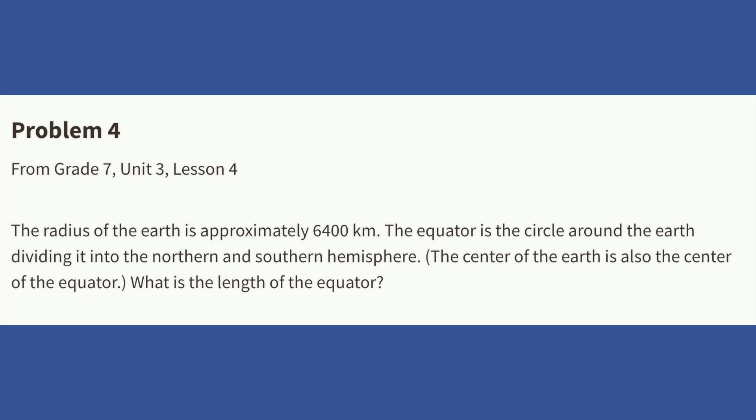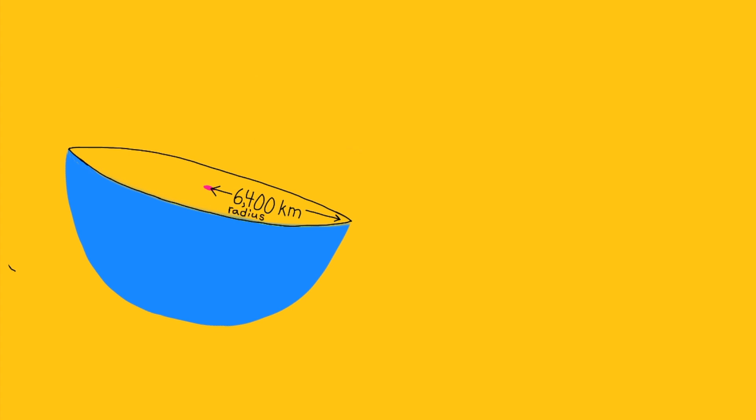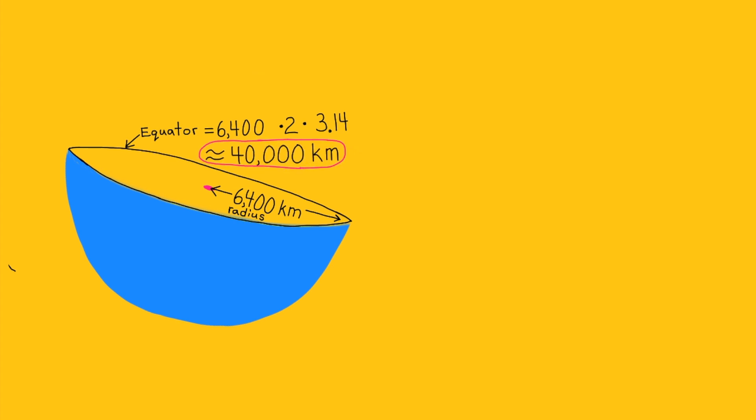Number four: The radius of the Earth is approximately 6,400 kilometers. The equator is the circle around the Earth dividing it into the northern and southern hemispheres, and the center of the Earth is also the center of the equator. What is the length of the equator? The radius is 6,400 km, so the diameter — and thus the equator's circumference — equals 6,400 times 2 times pi, making the length of the equator a little more than 40,000 kilometers.